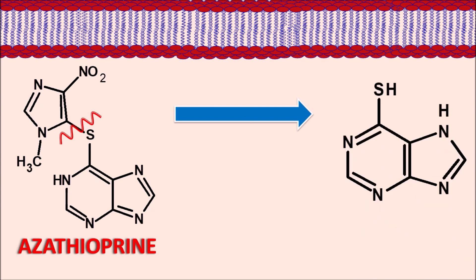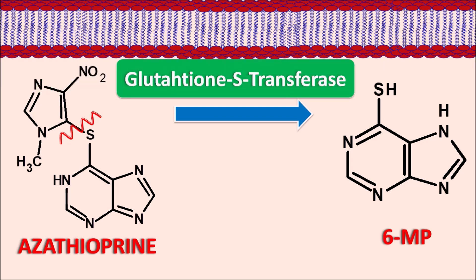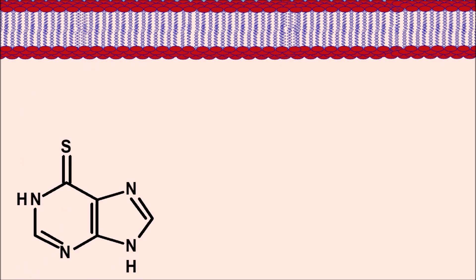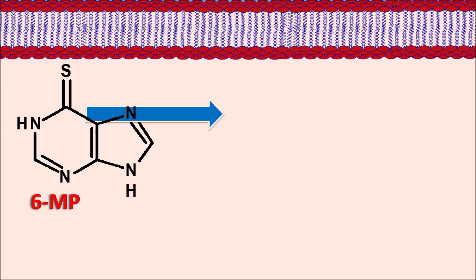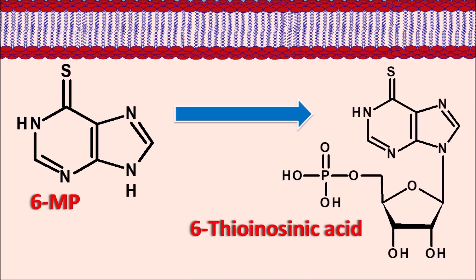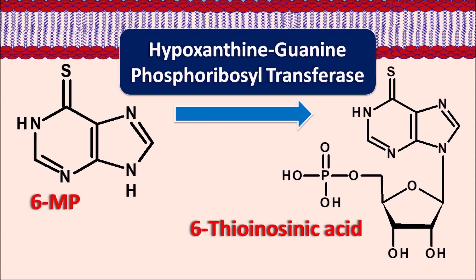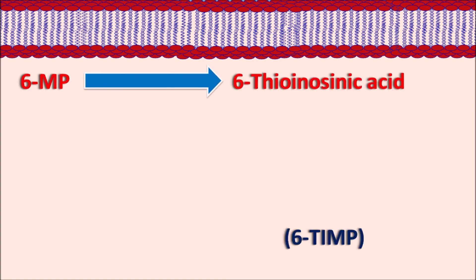The conversion of azathioprine to 6-mercaptopurine is mediated by the enzyme glutathione S-transferase, which transfers the imidazole ring attached to the sulfur group onto glutathione, producing 6-mercaptopurine with a free thiol group at the sixth position. This 6-mercaptopurine is then converted into 6-thioinosine monophosphate (6-TIMP) by the enzyme HGPRT (hypoxanthine guanine phosphoribosyl transferase).